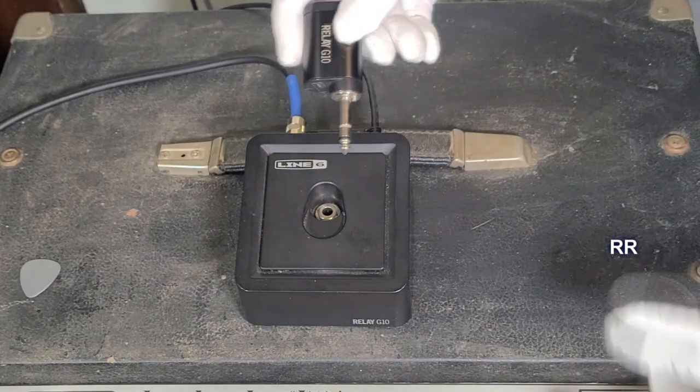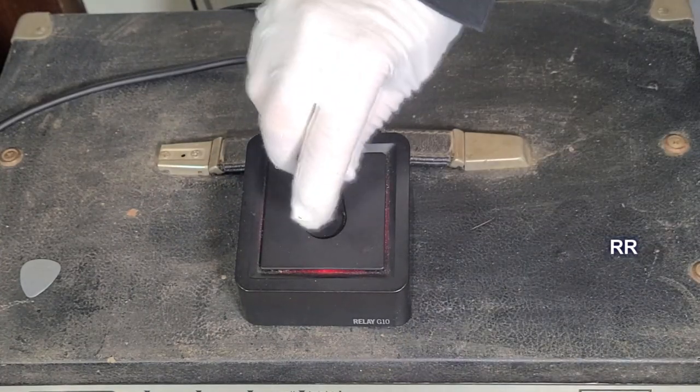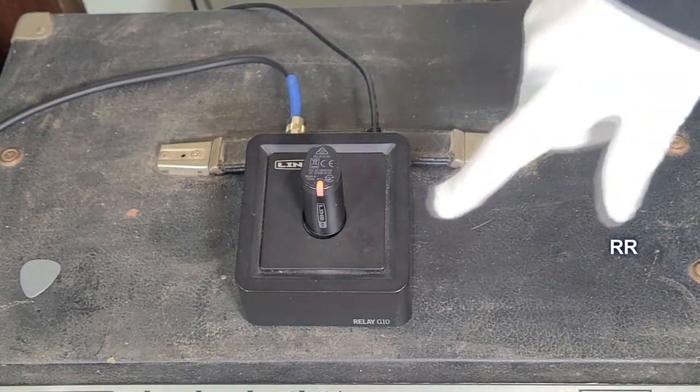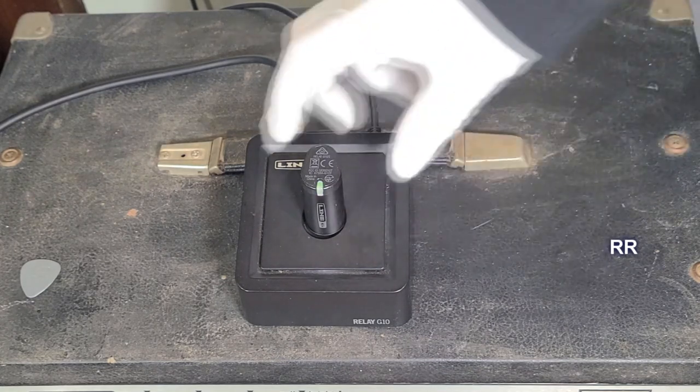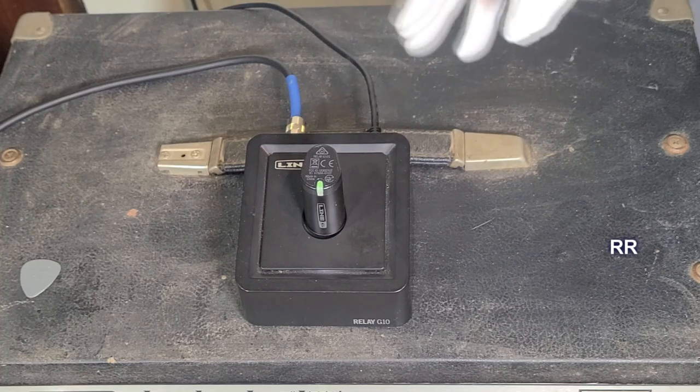This is the transmitter right here and this is the receiver and it also acts as a charging station. So what I'll do is between sets, I'll put it in the charging station. If it's really low, it'll be red and it'll flash green, and when it's ready to go, it's solid green.